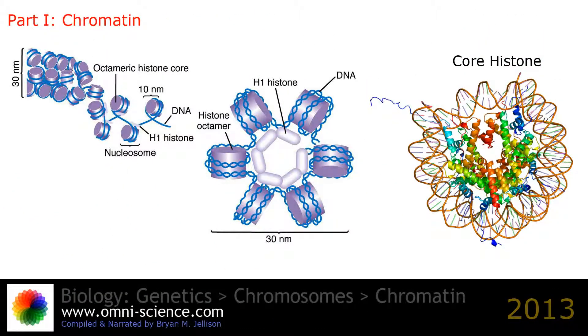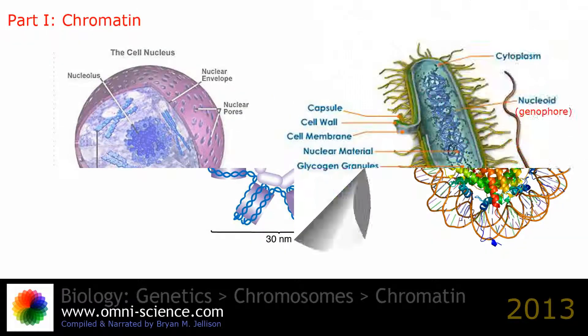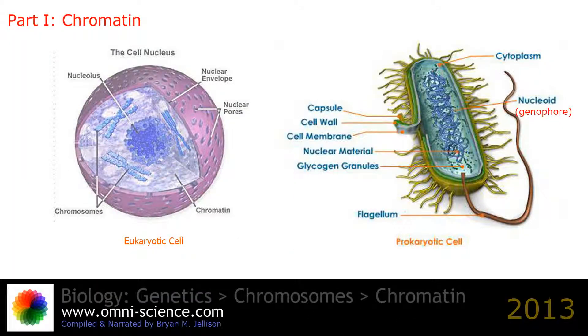Chromatin is only found in eukaryotic cells. Prokaryotic cells have a very different organization in their DNA, which is referred to as a genophore — a chromosome without chromatin.